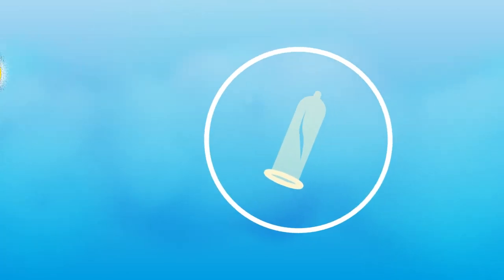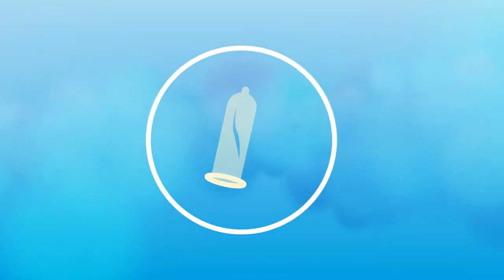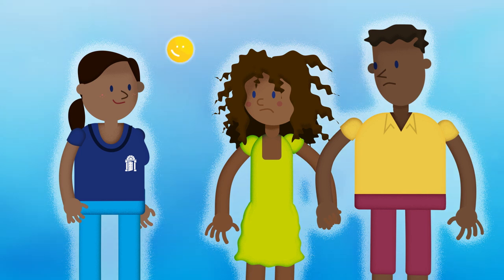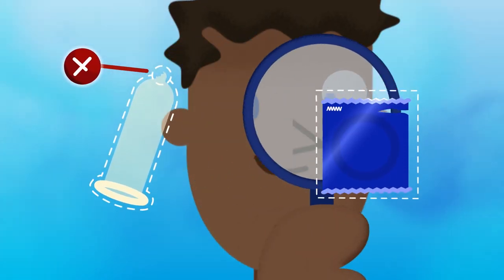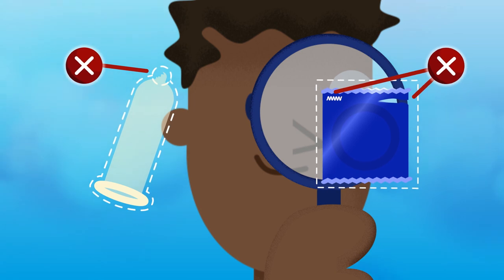If a condom breaks or falls off during sex, visit your health provider or pharmacist to test for infection and ask them about emergency contraception within five days. Checking the condom and its wrapper for damage and its expiry date can help protect against breakage.